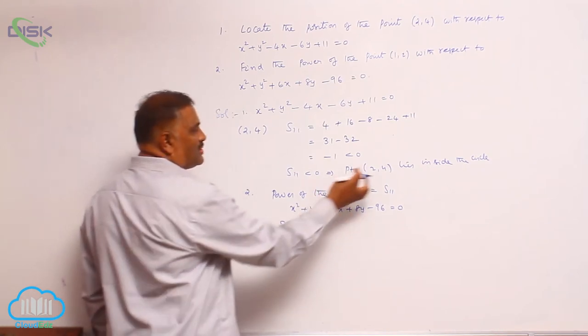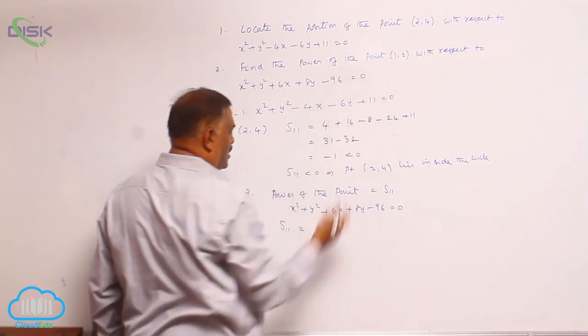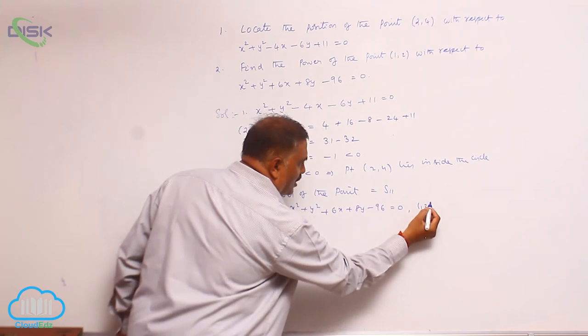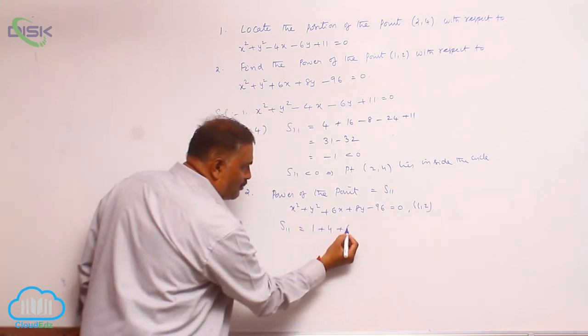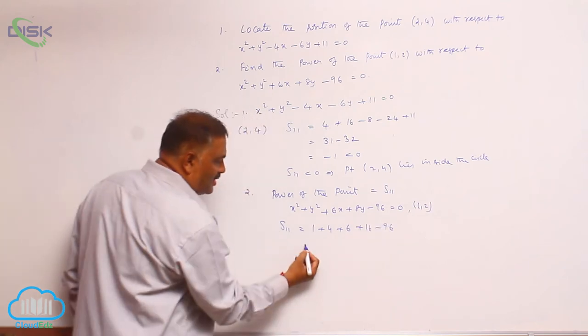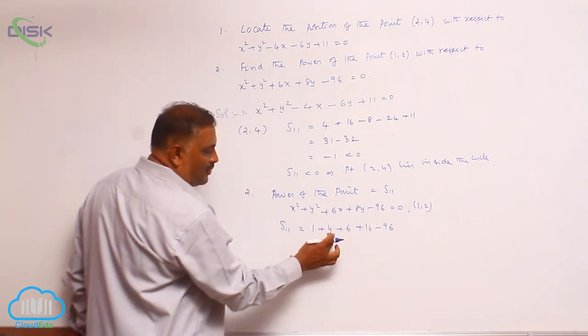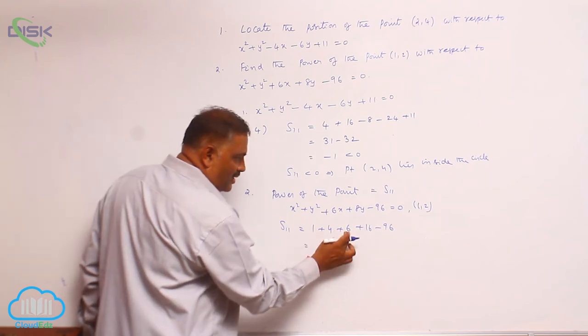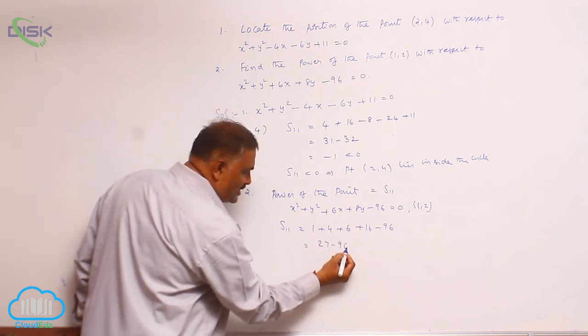S11 equals substitute the point (1,2). Here we write 1² + 2² + 6(1) + 8(2) - 96. This will become 1 + 4 + 6 + 16 minus 96. This is 5, 5 plus 11 is 11, 27 minus 96.